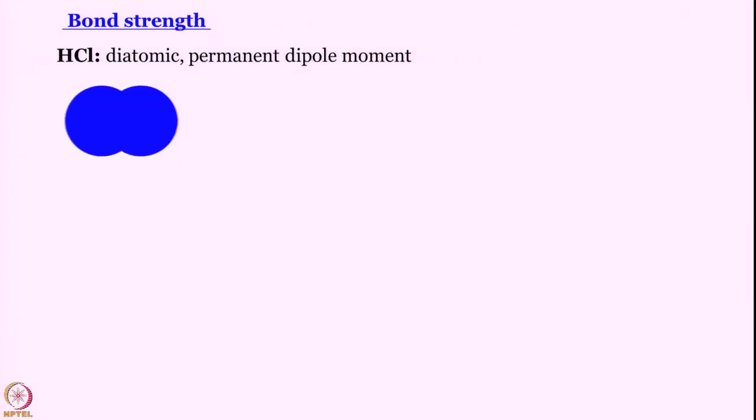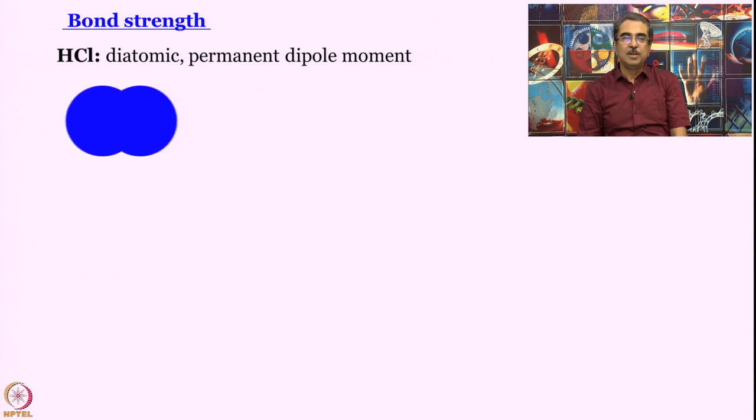HCl is a diatomic molecule with a permanent dipole moment. So, what happens when it vibrates? When it vibrates, essentially the dipole moment keeps changing. So now, if you plot the dipole moment along this direction, it will go up, then go down and then go up again. So you get an oscillatory behavior.